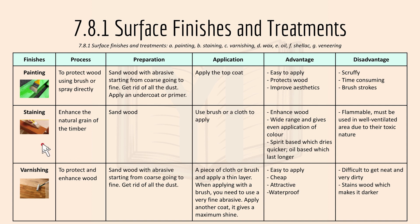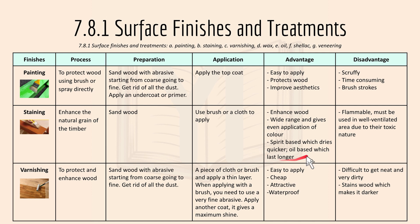Staining is basically enhancing the natural grain of a timber. You have to sand wood before staining it, by using a brush or cloth to apply. Advantages include it enhances wood and it gives a wide range and even application of colour. The disadvantage is that it's flammable, so it must be used in a well-ventilated area due to the toxic nature.